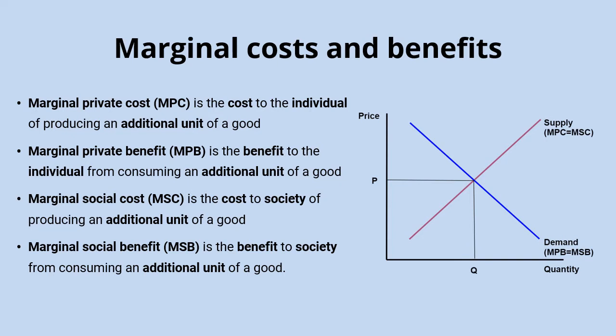So how does that relate to our supply and demand diagram? The key thing is that the supply curve is actually going to be the marginal private cost, because if you think about a firm determining the quantity of a product to supply, they will base this on the additional cost to them of producing that good. And when a consumer is determining how much of a good they're going to demand, they're going to be considering the additional benefit that that marginal unit would provide to them as an individual. So that makes the supply curve the marginal private cost and the demand curve the marginal private benefit.